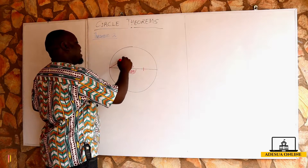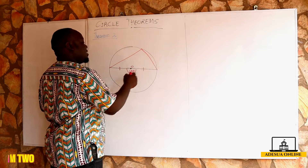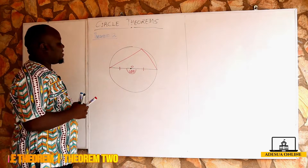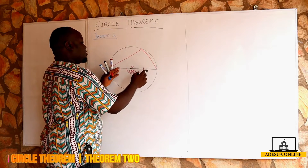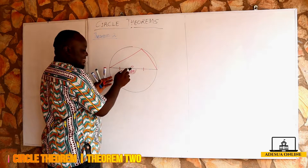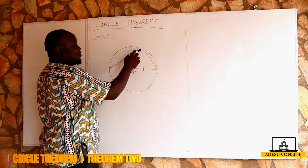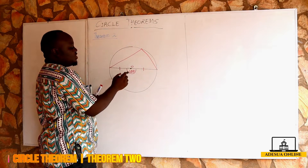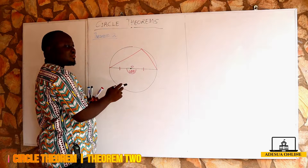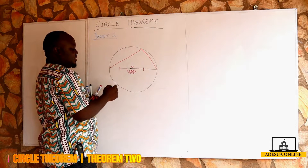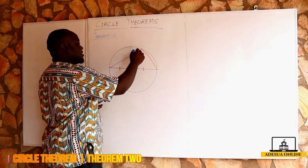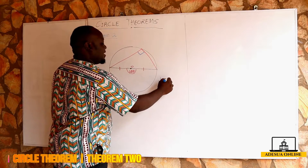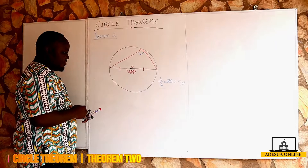From the first theorem, we learned that the angle suspended by a chord at the center is twice the angle it sustains to the circumference. The angle at the center is always bigger than that at the circumference. So if this angle is 180 degrees, it means the angle at the circumference is 90 degrees, which is half of 180.